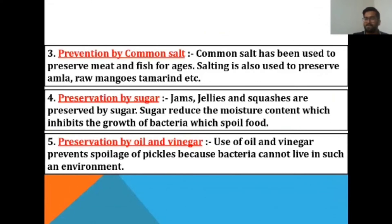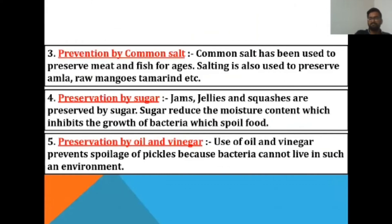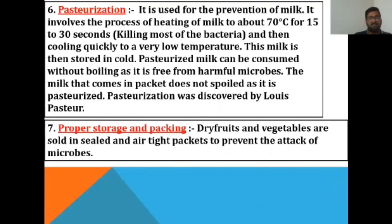Preservation by sugar: jams, jellies, and squashes are preserved using sugar, which reduces the moisture content and inhibits the growth of bacteria that spoil food. Preservation by oil and vinegar: use of oil and vinegar prevents spoilage of pickles because bacteria cannot live in such an environment.